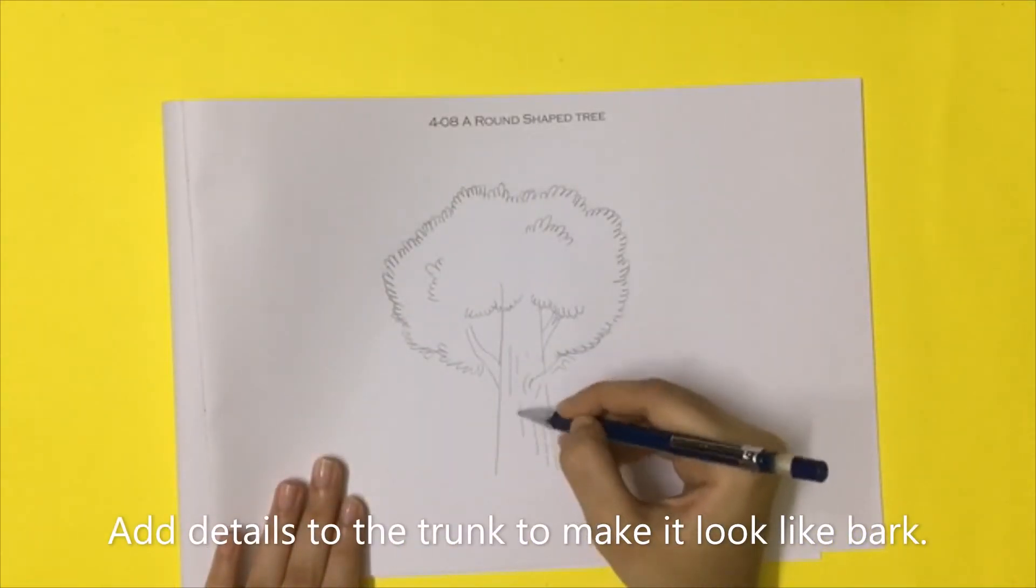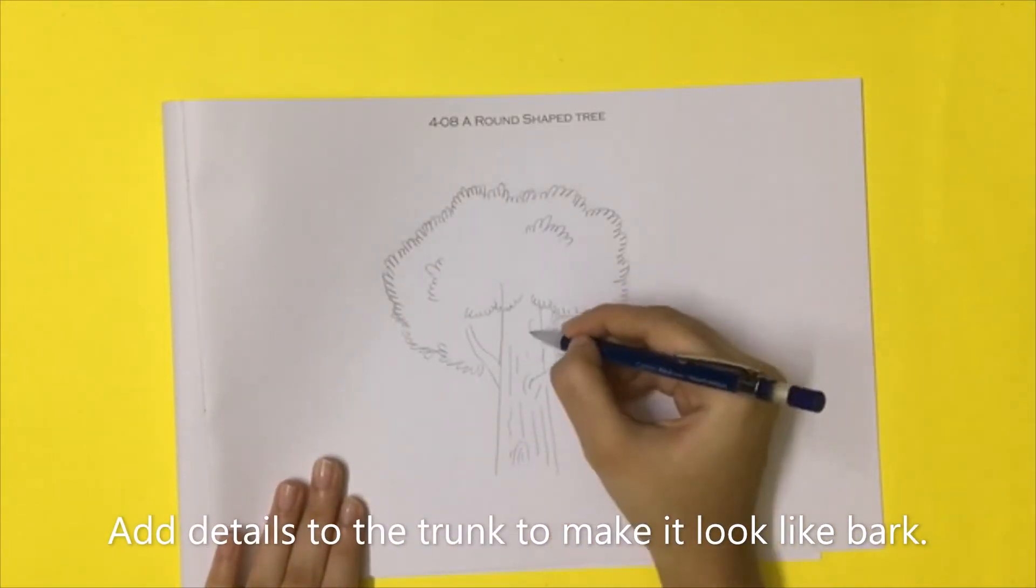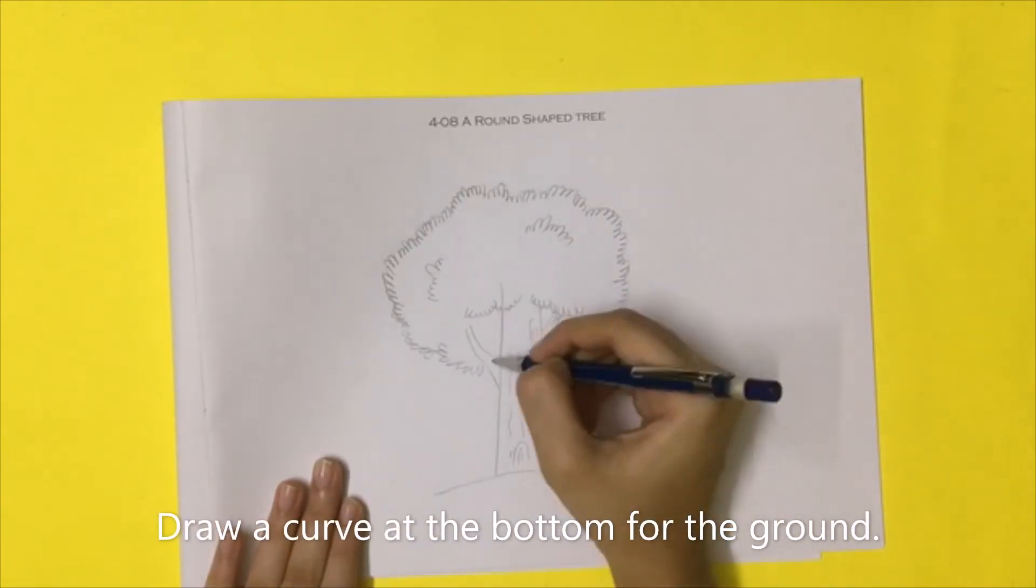Add details to the trunk to make it look like bark. Draw a curve at the bottom for the ground.